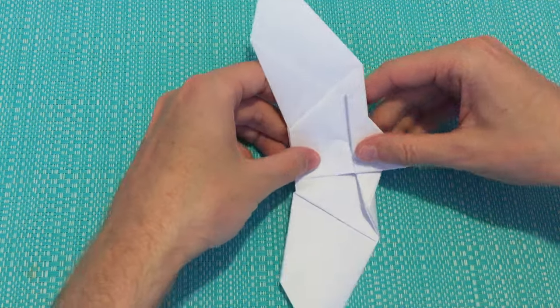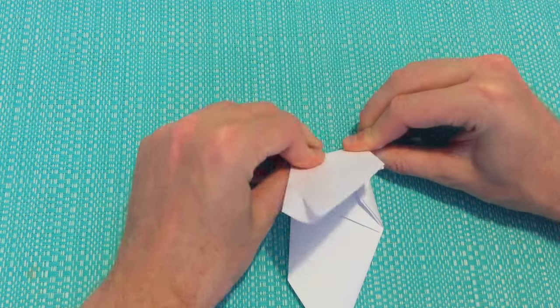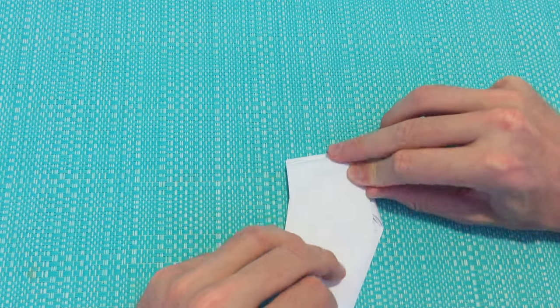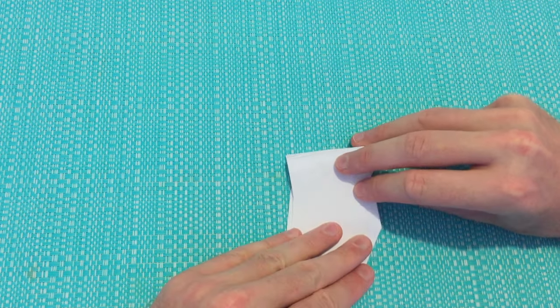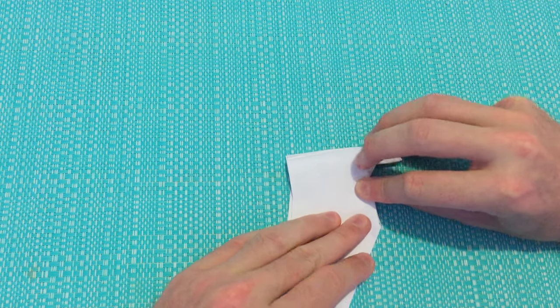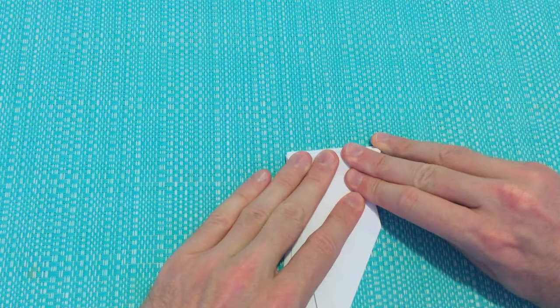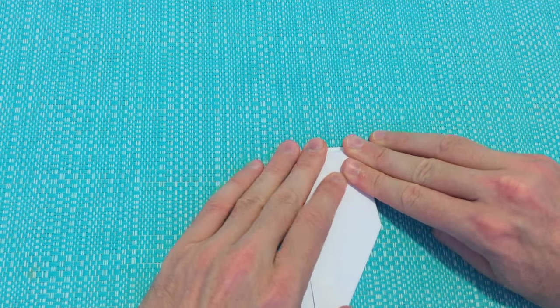Then we'll turn the plane over and we'll fold the other side down. So for this one, let's make sure that the wing tips line up equally again. Then when we create our crease, it will leave us with equal length wings.